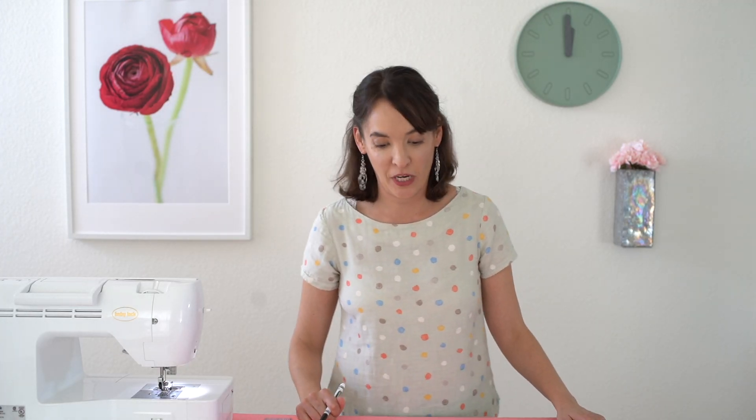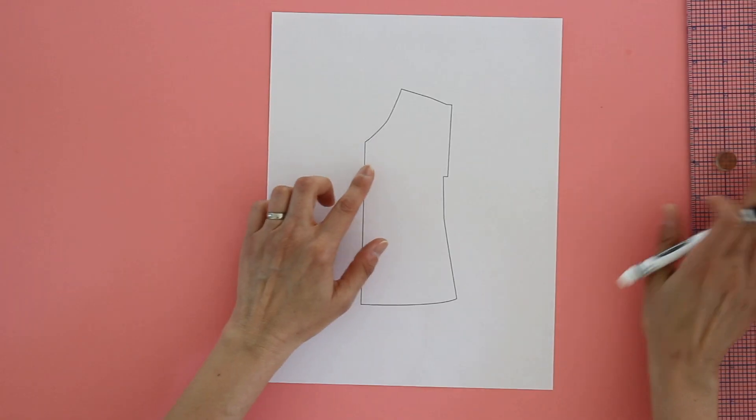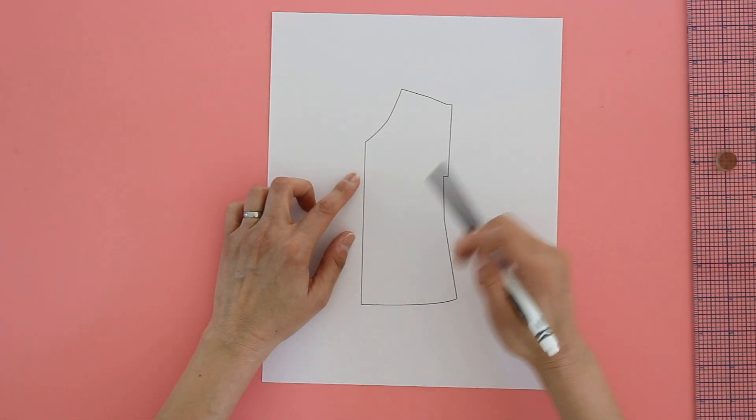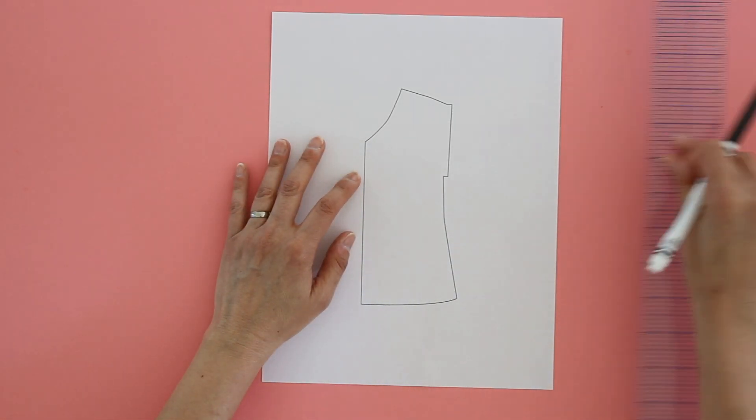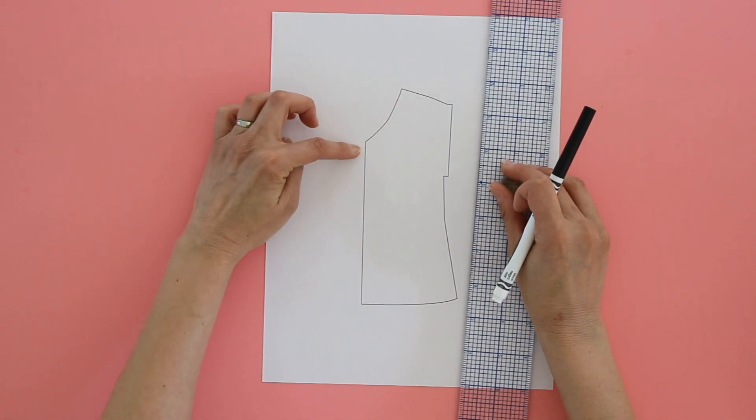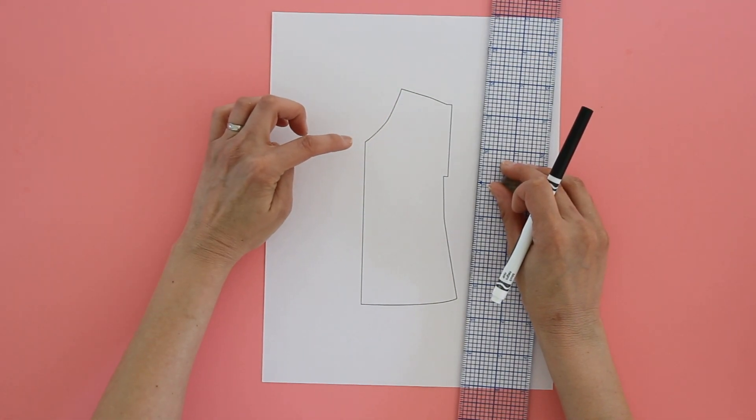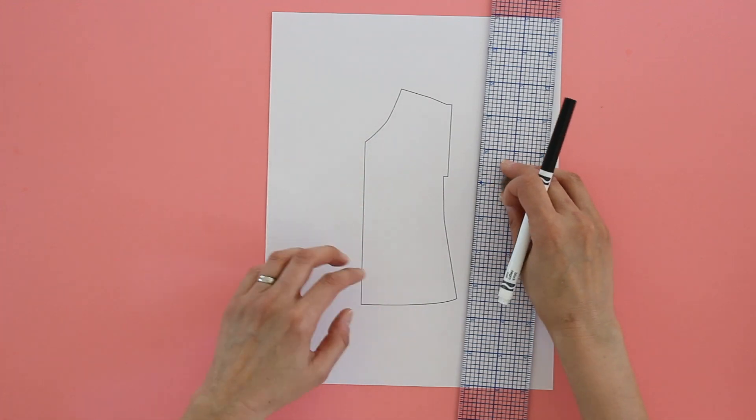Let's look at the pattern alterations we'll need to make. So this is for my Esma top that I'm going to be stitching up, and I chose this one because it has a V neckline. While you can do this on any neckline, it is sometimes confusing what it looks like on a V neckline, so that's why I chose this one.